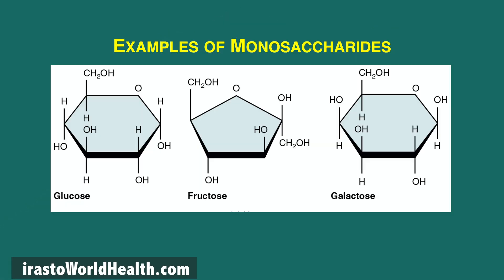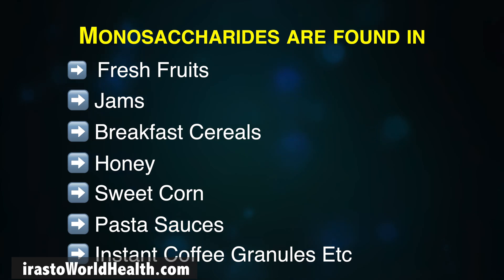Monosaccharides are simple sugars — mono means one and saccharide means sugar. Examples are glucose, fructose and galactose, and the difference between these three are how their atoms are arranged in the chemical structure. These are a few examples of monosaccharides which we consume every day.